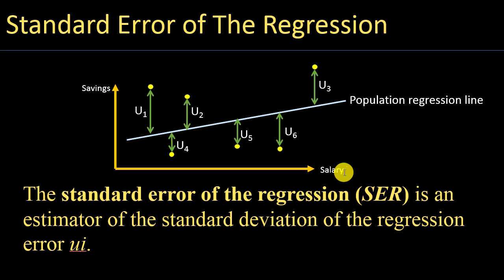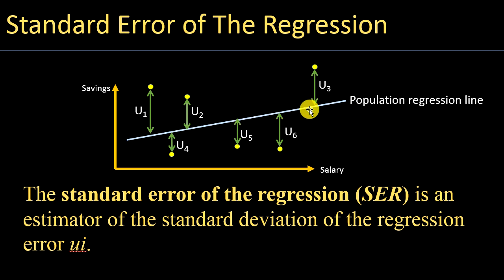— saying we will draw the population regression line in practice means we need to collect data from all 5 million individuals. We know that in reality this is not practical, so what we normally do is select a random sample and draw the sample regression line. But let's assume for a moment that we know the population regression line.